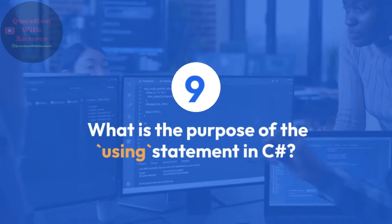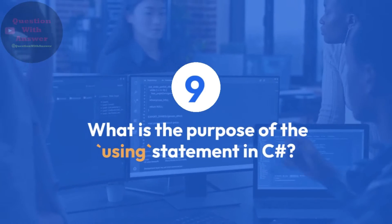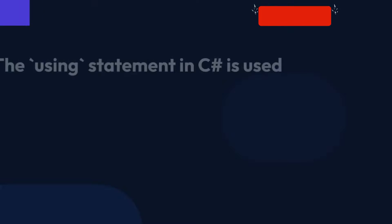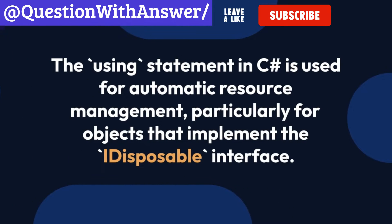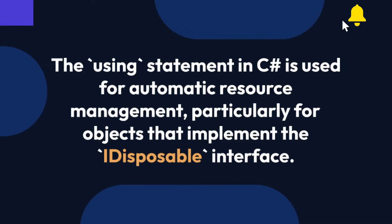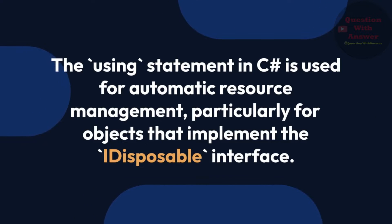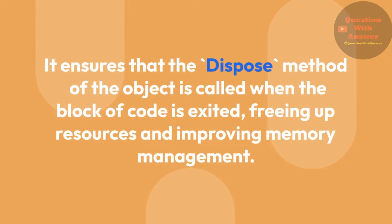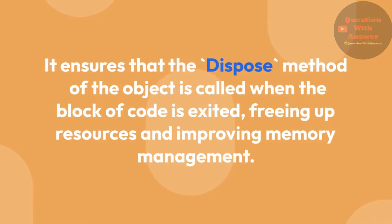Question 9: What is the purpose of the using statement in C#? Answer: The using statement in C# is used for automatic resource management, particularly for objects that implement the IDisposable interface. It ensures that the Dispose method of the object is called when the block of code is exited, freeing up resources and improving memory management.